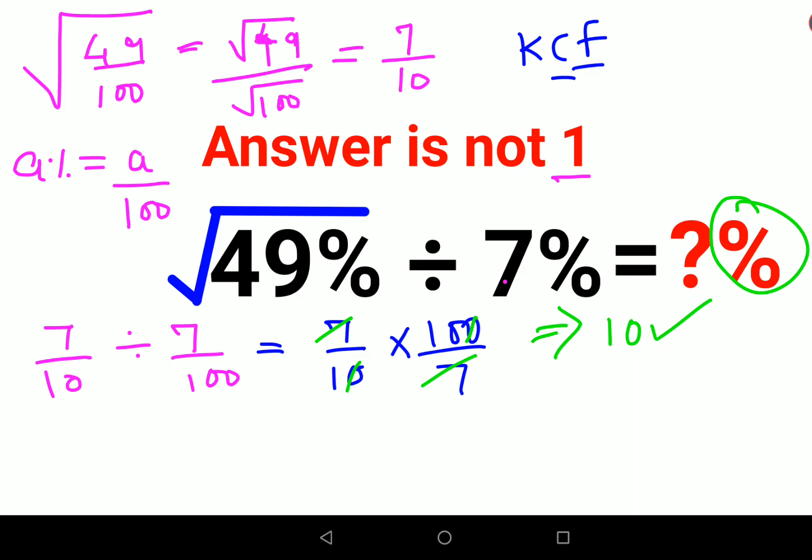But if they wanted the answer in percentage, understand whenever they have given you in percent you will divide by 100. If you want it in percent you will multiply by 100. So answer comes out to be thousand percent.